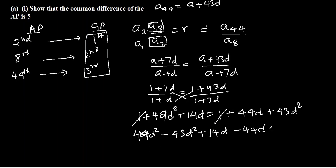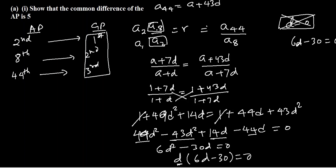So 49D squared minus 43D squared plus 14D minus 44D equals 0. 49 minus 43 is 6D squared, and 14 minus 44 is minus 30D equals 0. Let's take D common: D times 6D minus 30 equals 0. Now there are two factors, either D is 0 or 6D minus 30 is 0. They have clearly said the common difference is positive, so D cannot be 0. This gives us D equals 30 over 6, which is 5.